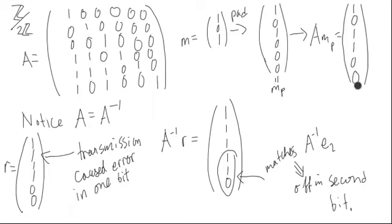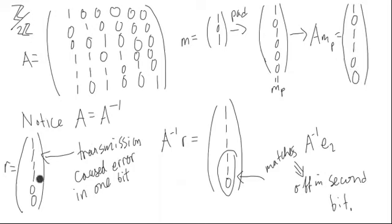Now, what happens in transmission? Let's assume that one bit is changed — there's some kind of noise in the channel, and maybe just one bit has changed. The question is: which bit is it, and when can we detect it? Let's suppose that the noise in the channel has changed this bit, changing it from a zero to a one.